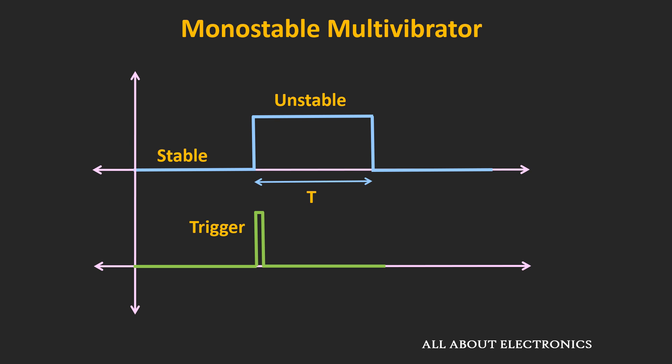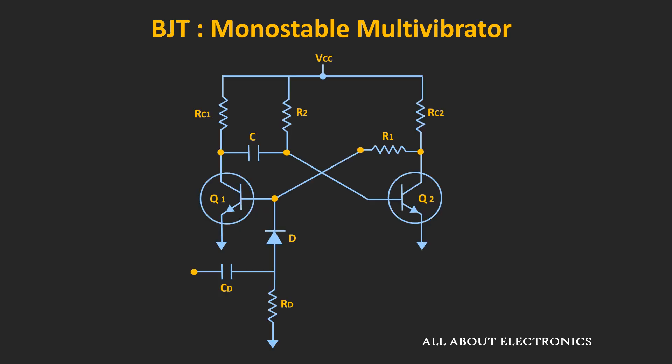Now let's see how this monostable multivibrator can be designed using the BJT. This is the circuit of the monostable multivibrator. As you can see, it consists of two transistors — this is the first transistor, while this is the second transistor.